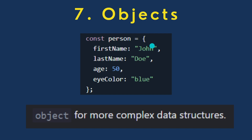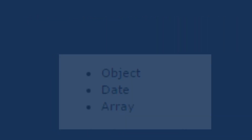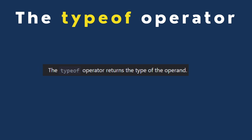For example, we have: string, string, number, string, and object. Objects are used to store collections of data and more complex structures.